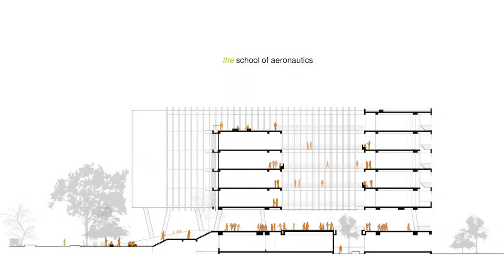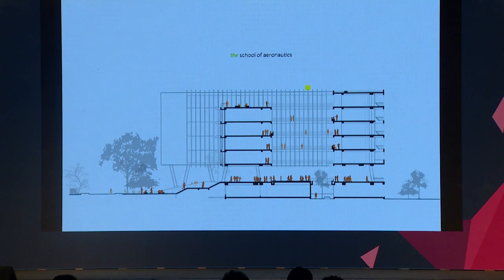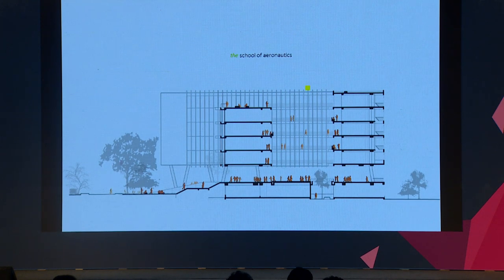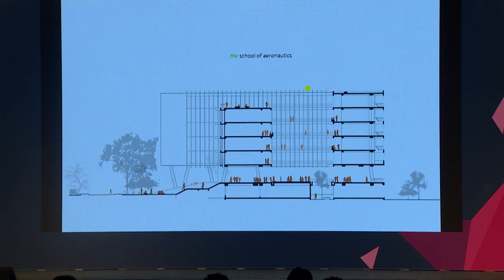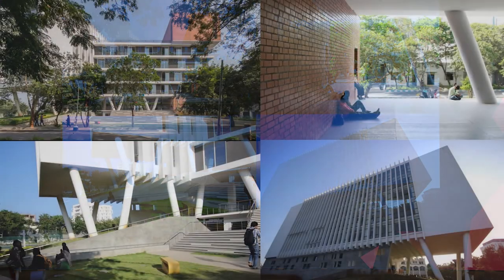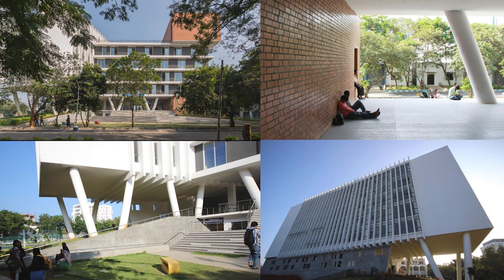This is another building we completed in the same campus, where you can see the negotiation between the figure and the ground — how we articulated that section so the ground comes into the campus, comes into that particular building, thereby creating multiple identities and a sense of place.